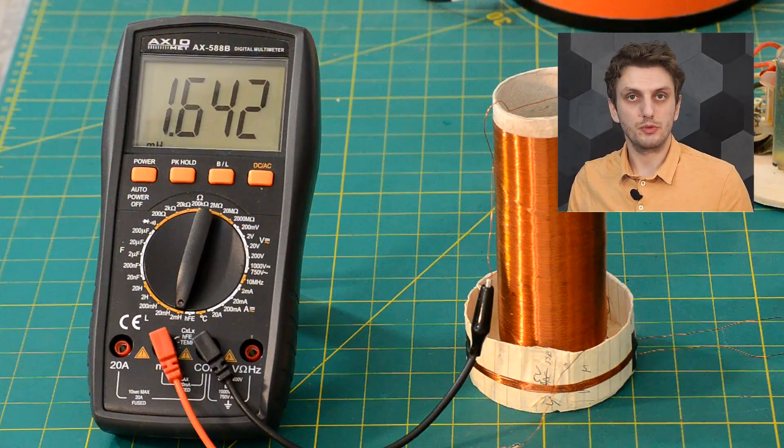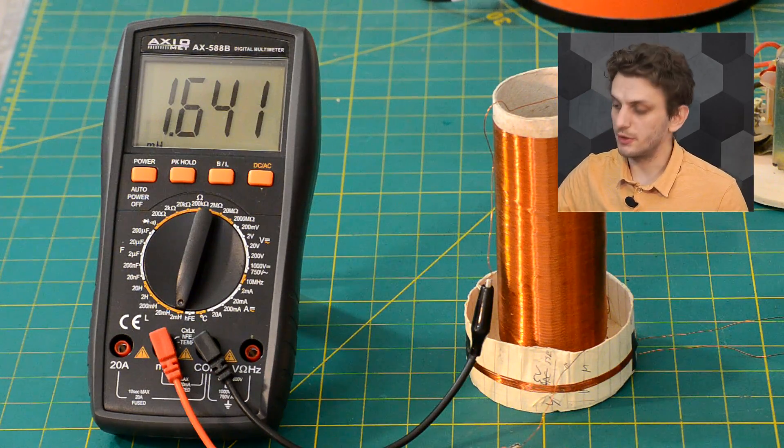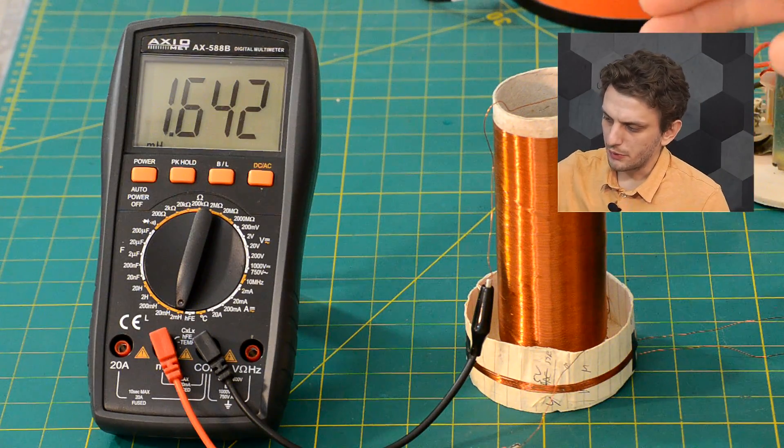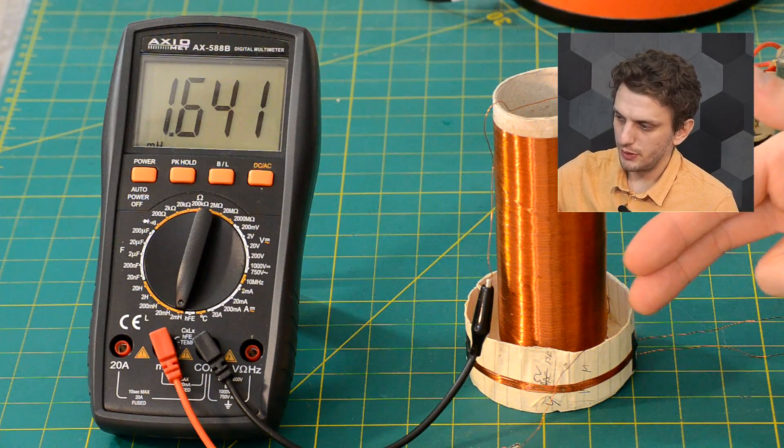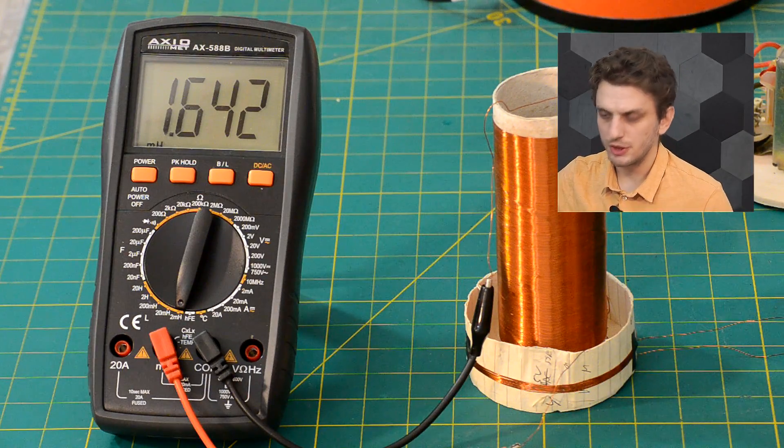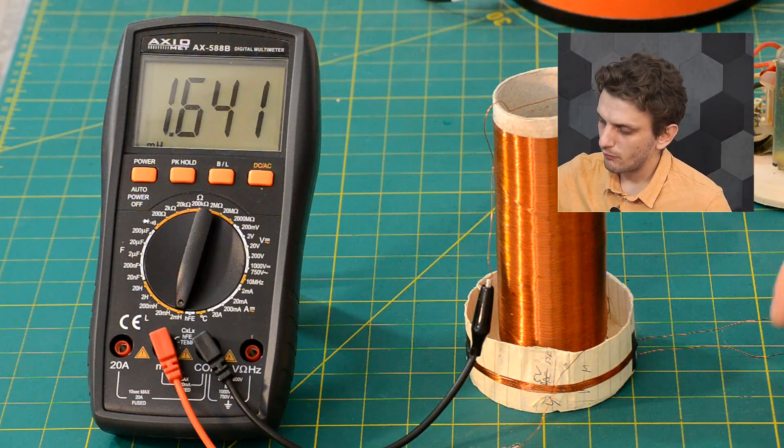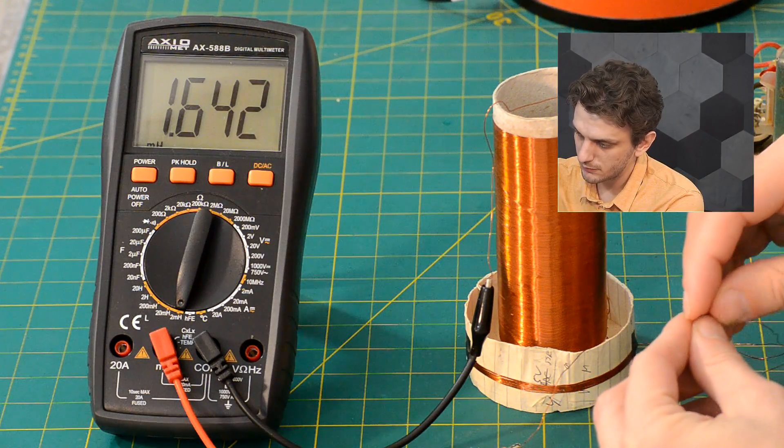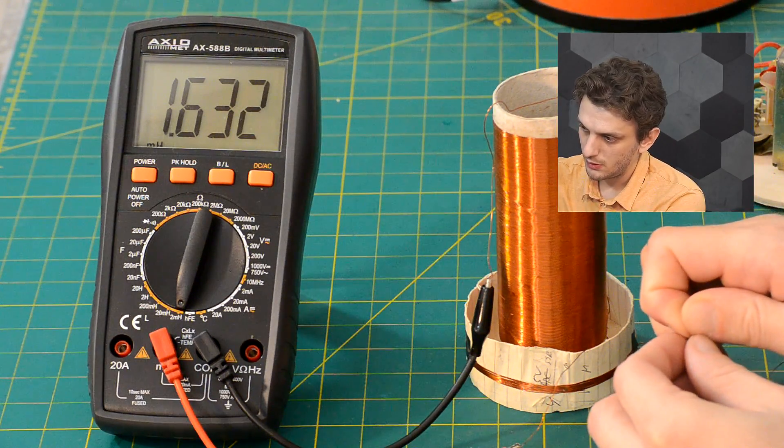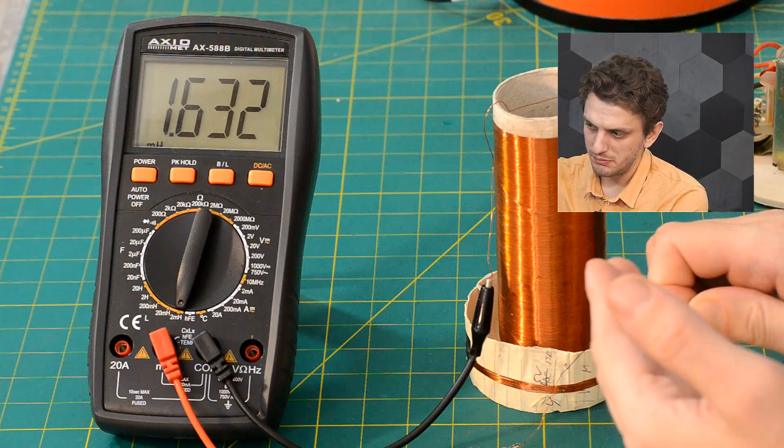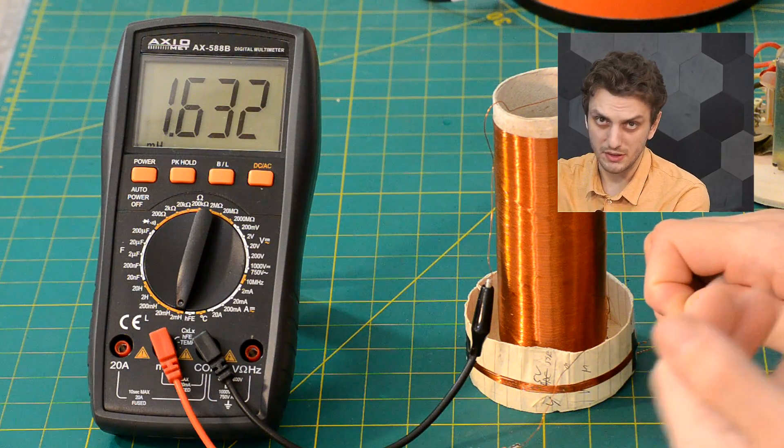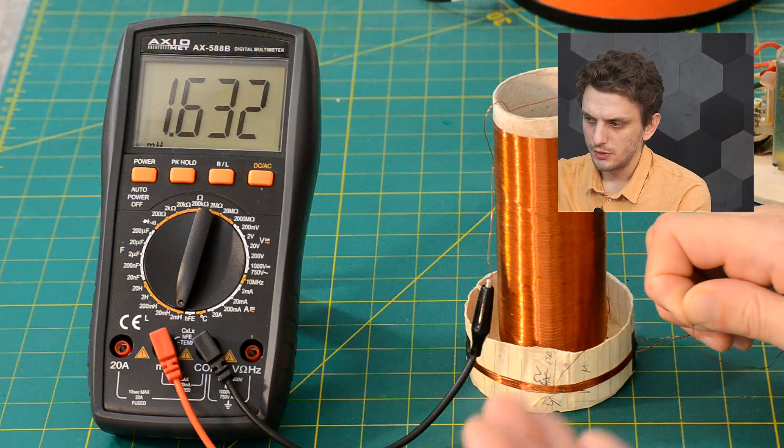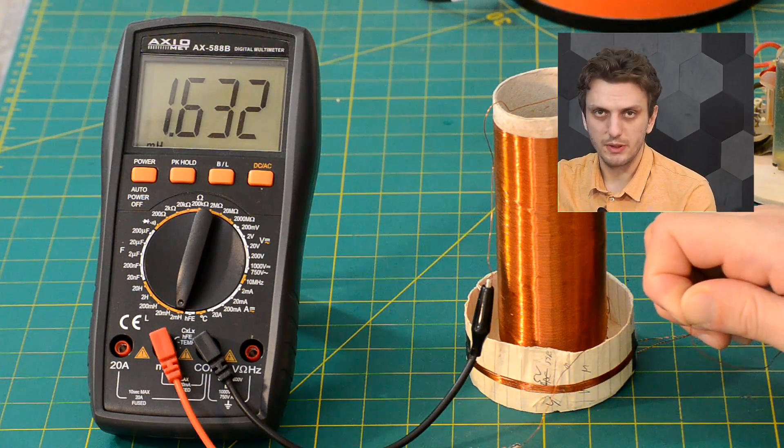Now we can also perform a similar experiment for my other inductor so for my Tesla coil transformer and here I'm measuring the large coil it has 1.642 millihenry and now if I take my small inductor and short circuit it we can see that the first inductor's inductance changes but by a very small amount.